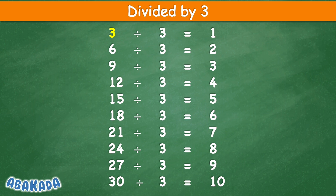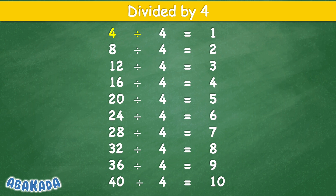Divided by 3: 3 divided by 3 equal 1, 6 divided by 3 equal 2, 9 divided by 3 equal 3, 12 divided by 3 equal 4, 15 divided by 3 equal 5, 18 divided by 3 equal 6, 21 divided by 3 equal 7, 24 divided by 3 equal 8, 27 divided by 3 equal 9, 30 divided by 3 equal 10.